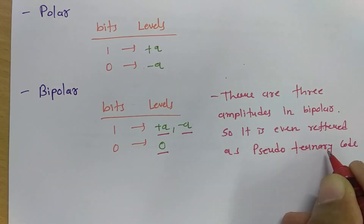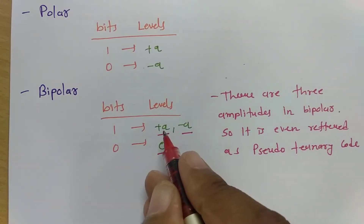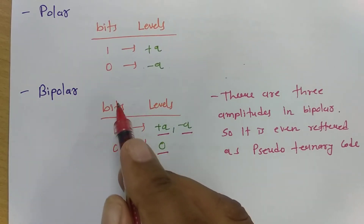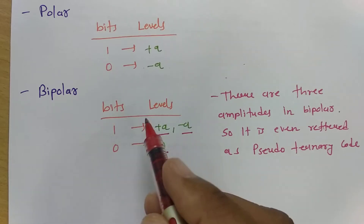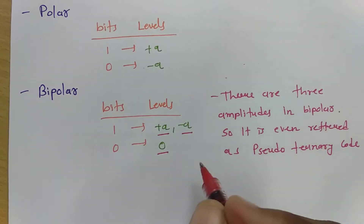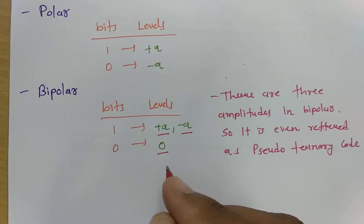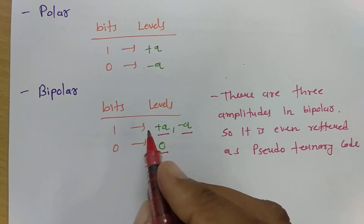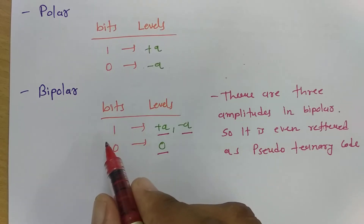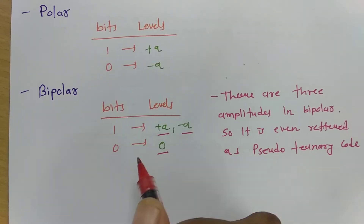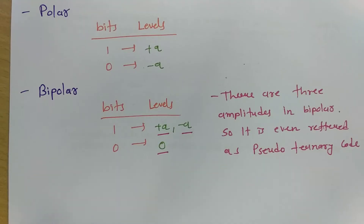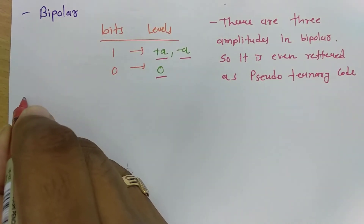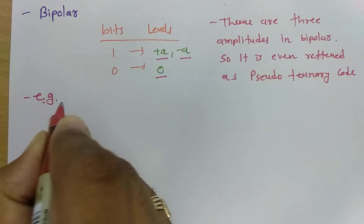Ternary means three. Here we are assigning three voltages in terms of zeros and ones — that is why it is referred to as pseudo ternary code. One more important thing to understand: the plus A and minus A voltages are assigned alternatively. Let us understand this with an example of bipolar so it will be more clear.